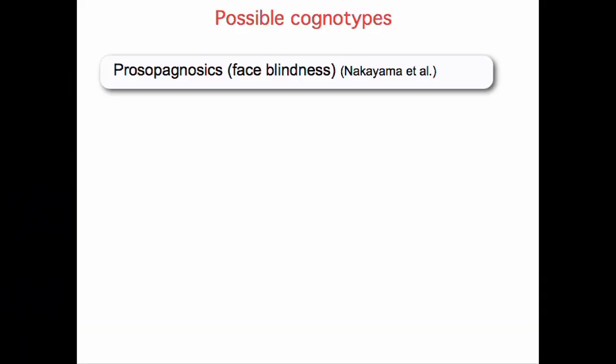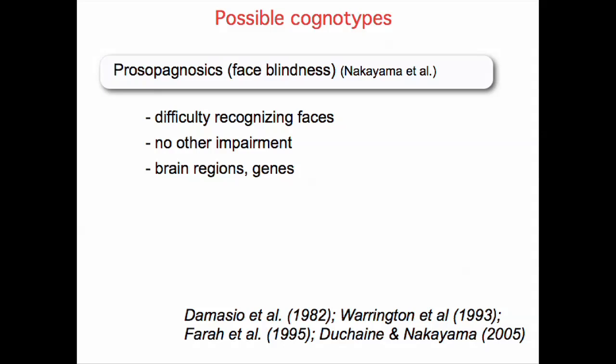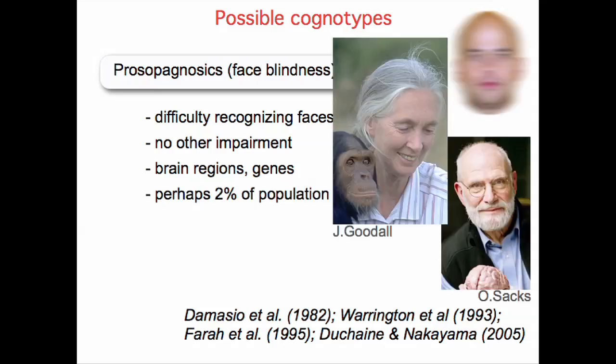A completely different cognotype: prosopagnosics. These are people who have great difficulty recognizing faces — real trouble telling faces apart — but they have absolutely no other impairments. It's a module; it stands by itself and has to do with face processing and nothing else. There's a lot of neuroscience studying these brain regions and the genes underlying them. Some very well-known prosopagnosics include scientists and writers Jane Goodall and Oliver Sacks.